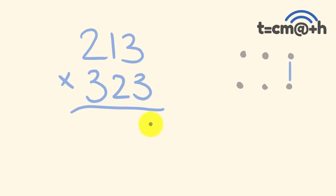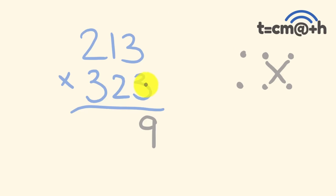So 3 times 3 is 9. For the next part of our answer — the tens part — we have tens times units and units times tens. These are the ways we can get tens. So we have 1 times 3, which is 3, and 3 times 2, which is 6. We're going to add those together: 3 plus 6 is 9, and that gives us our tens part of our answer.